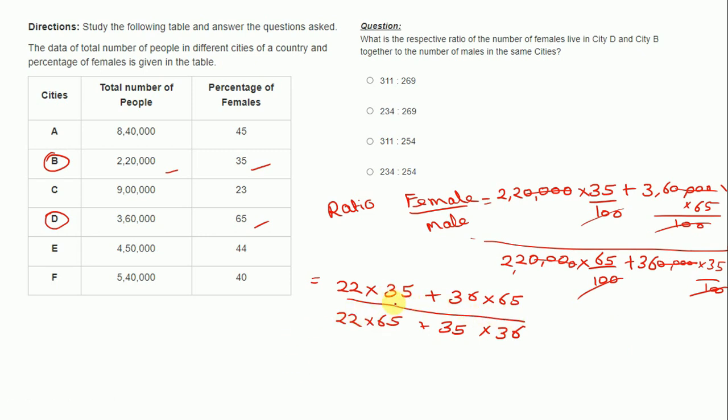This 100 will be cancelled as it is in ratio. These four zeros we are also cancelling because we are just finding the ratio. Now what we are left with: 22 into 35 plus 36 into 65 divided by 22 into 65 plus 36 into 35. We have to solve this.